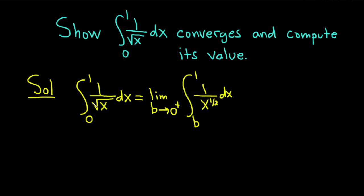So basically whenever you have an infinite discontinuity like this, you replace it with a variable and you let the variable approach the number. So you might be wondering why are we approaching from the right?